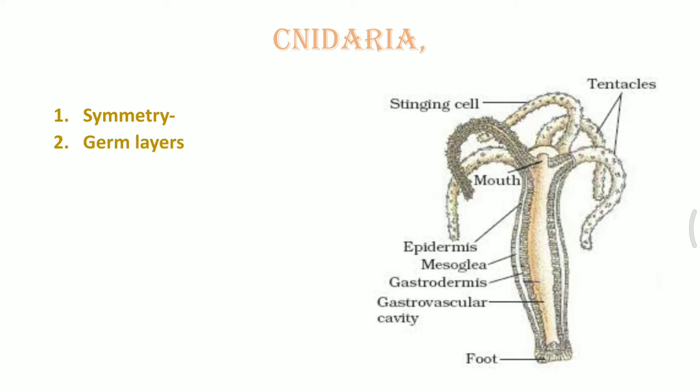Next is about the germ layers. In the case of cnidarians, we have already seen the presence of epidermis and mesoglea inside. So it is definitely a diploblastic organism with the presence of ectoderm and endoderm, and inside is the presence of mesoglea.